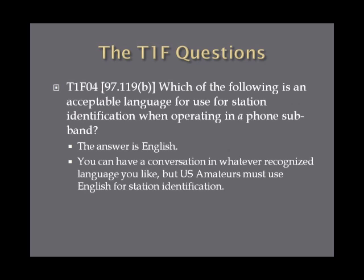Which of the following is an acceptable language for use for station identification when operating in a phone subband? The answer is English. You have a U.S. FCC issued amateur radio license. The national language in the United States is English. The conversation you have can be in any language you want, but you as an amateur have to provide station identification in English.